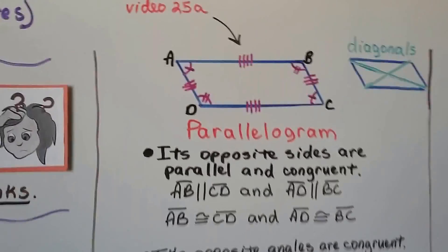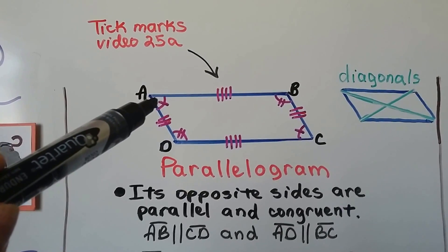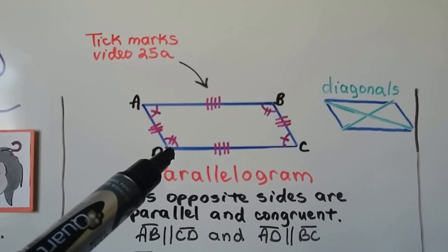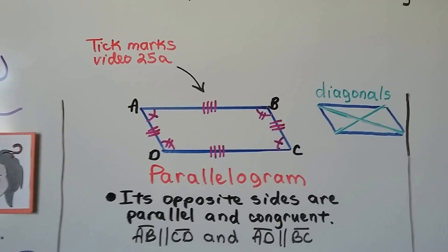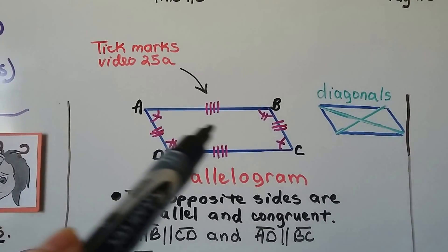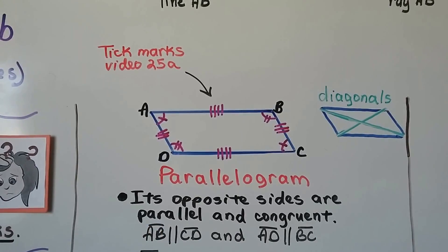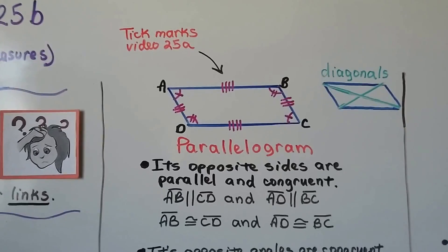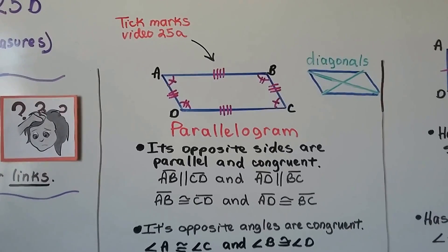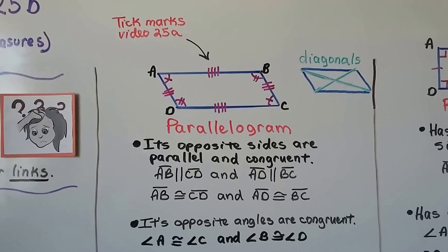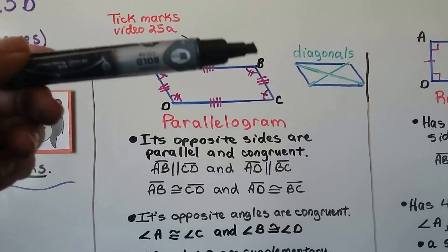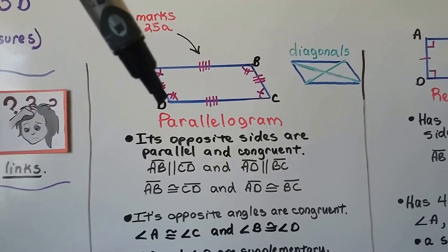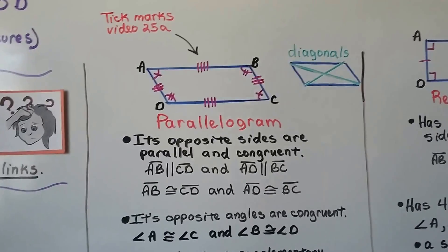We talked about tick marks in the last video. This one-tick-mark angle matches this one-tick-mark angle. This two-tick-mark angle matches that two-tick-mark angle. This three-tick-mark side matches that three-tick-mark side, and that four matches that four. So this is a parallelogram, and its opposite sides are parallel and congruent — that side is parallel to that side and they're the same length, and this side is parallel to this side and they're the same length.